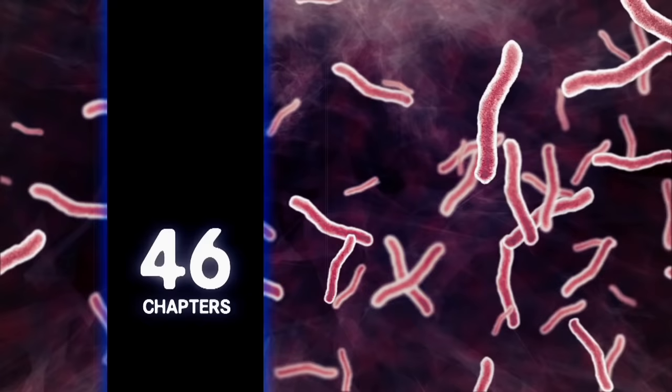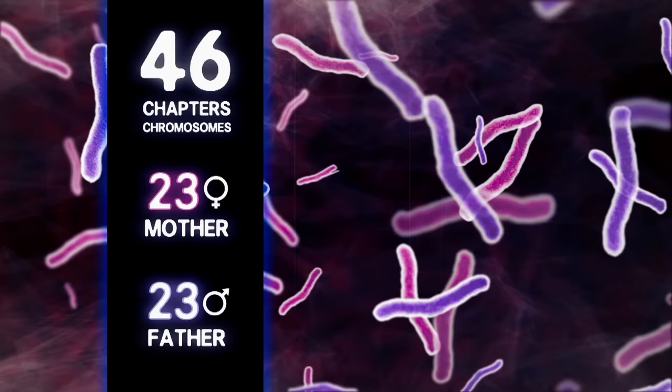Each tiny mass of DNA is called a chromosome. The book of you would have 46 chapters, one for each chromosome. 23 chapters of your book came from your mom and 23 chapters came from your dad.